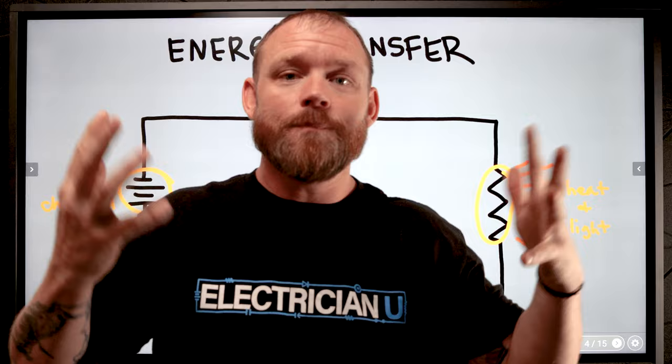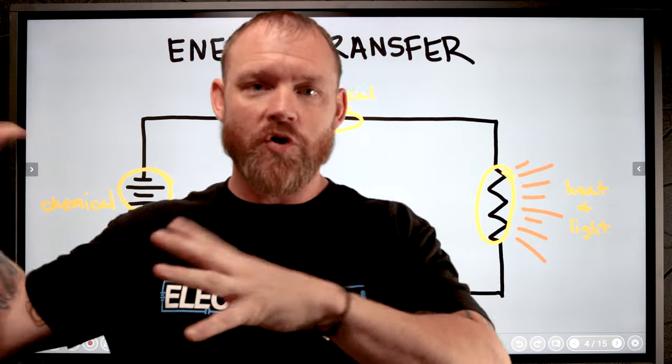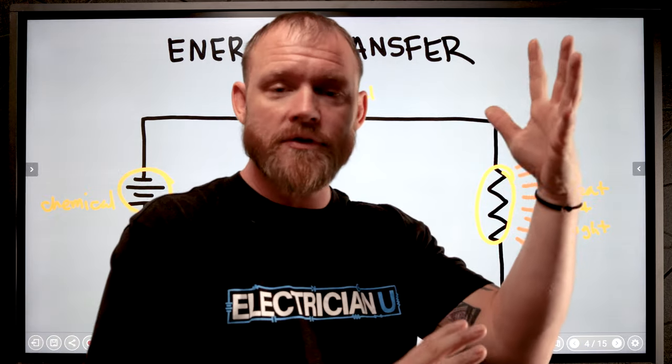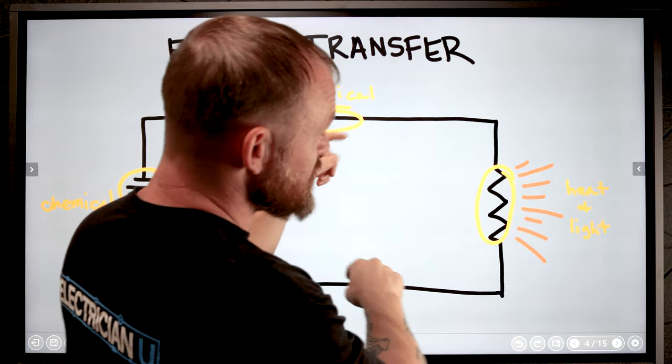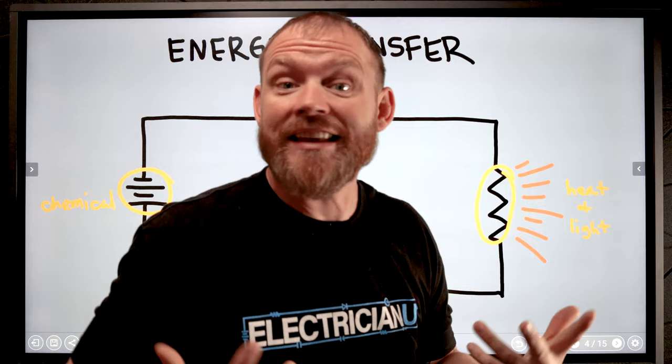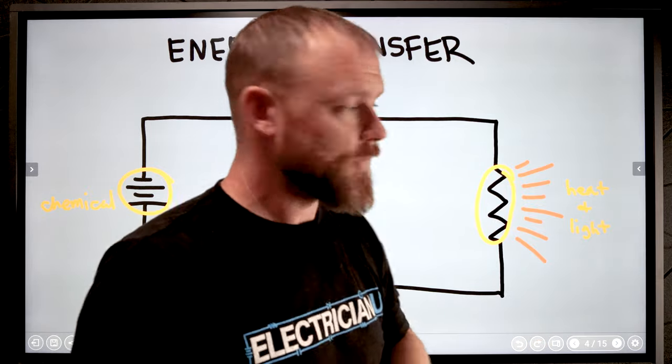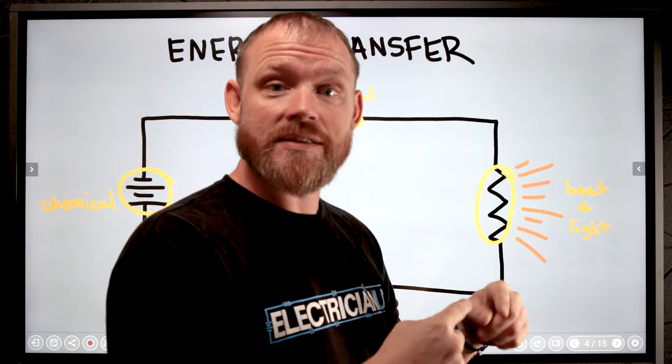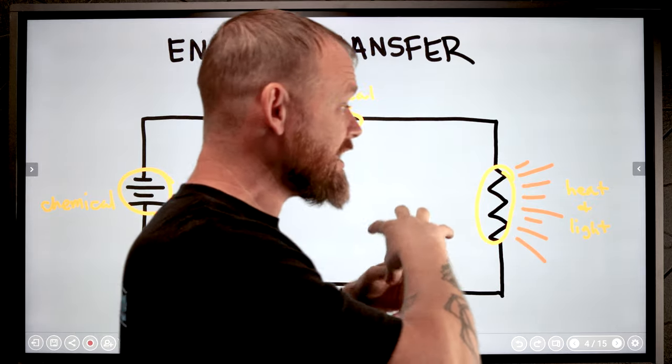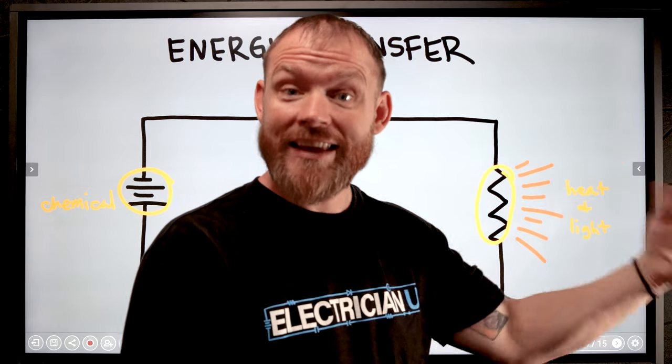It's still the same energy, it's just being transformed from one type to another type, and then through the conductors as we pass down, we're converting the electrical energy into a load. Let's say like a heating element inside of a toaster. That heating element is going to give off a glow, so some of that energy is going to be changed from electrical energy into light energy and heat energy.